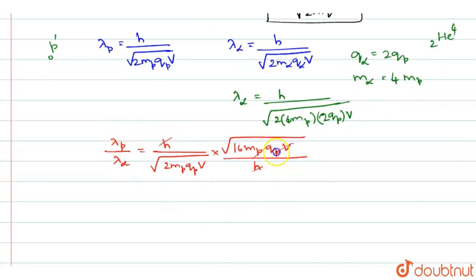So this when you further simplify it, all the variables get canceled. You will be retained with lambda p by lambda alpha is equal to root 16 is 4, 4 divided by root 2.